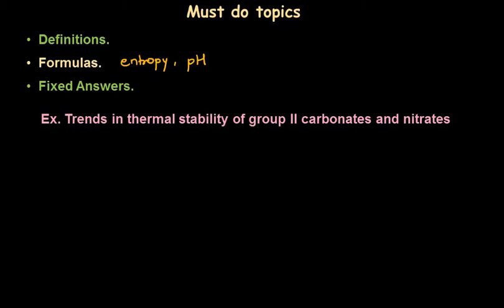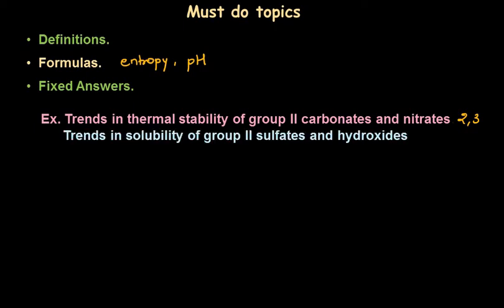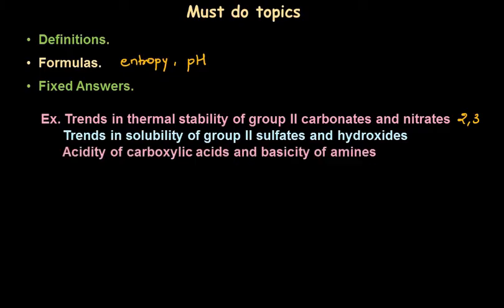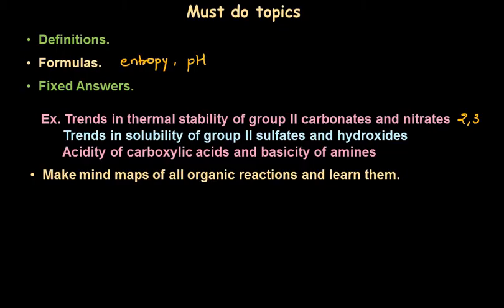Also learn the fixed answers for Paper 4. There are questions with predictable answers, for example: trends in the thermal stability of Group 2 carbonates and nitrates, and trends in the solubility of Group 2 sulfates and hydroxides — these are frequently asked and carry 2 to 3 marks each. Just learn 2 to 3 sentences for each and score those marks easily. Other fixed-answer topics include acidity of carboxylic acids and basicity of amines. Also make mind maps of all the organic reactions and learn them — there are only a few organic reactions you need to learn, so don't take too much pain with the organic topic.